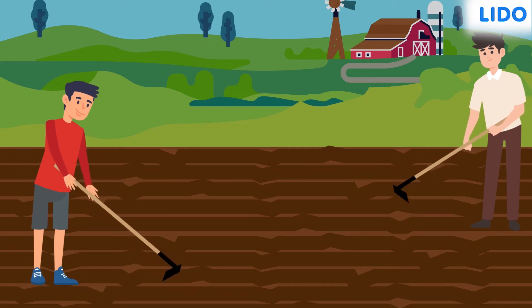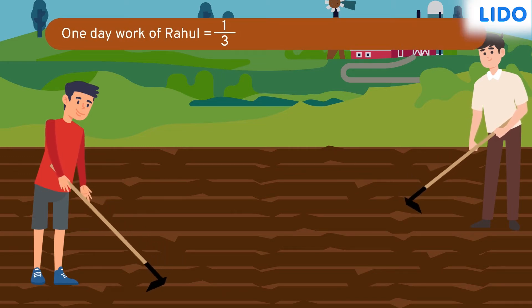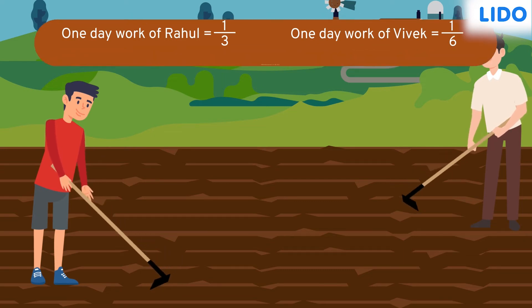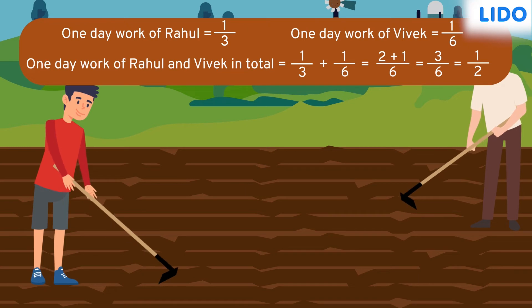We know that daily, Rahul does one third of the work and Vivek does one sixth. So, if they work together, the total amount of work done in one day will be one third plus one sixth, which is half.